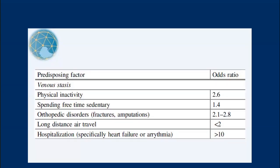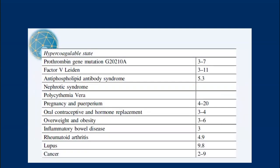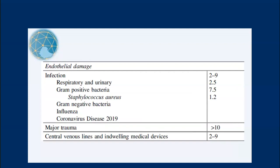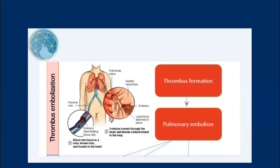This slide shows all predisposing factors and their odds ratios. For venous stasis, hospitalization has the highest odds ratio — increasing your chance of developing thrombus by a factor of 10. For the hypercoagulatory state, the slide shows how each factor contributes to thrombus generation. For endothelial damage, trauma also has the highest odds factor of greater than 10. Whenever there is thrombus formation due to these factors, the thrombus propagates, detaches, and moves to the pulmonary system, causing pulmonary embolism.